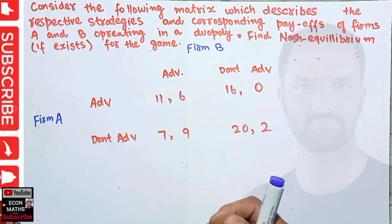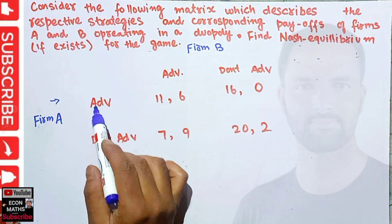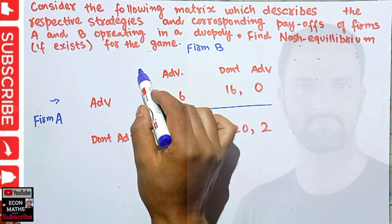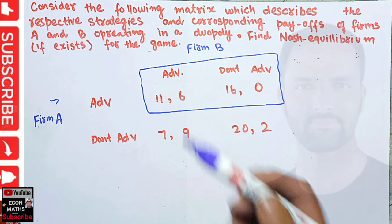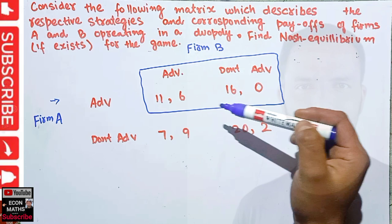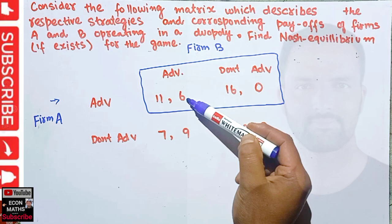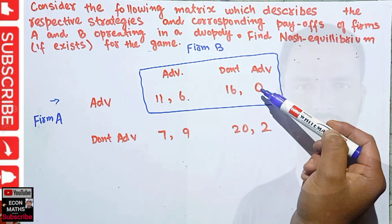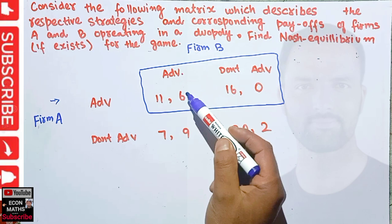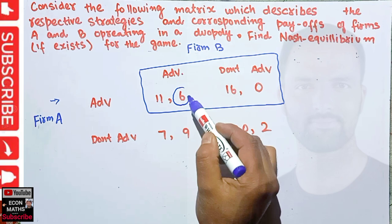Let's see how to solve for the Nash equilibrium. First, what happens if Firm A chooses to advertise? We need to find the best action for Firm B given that Firm A advertises. Firm B can advertise and get a payoff of 6, or not advertise and get a payoff of 0. Since 6 is greater than 0, Firm B will choose to advertise.